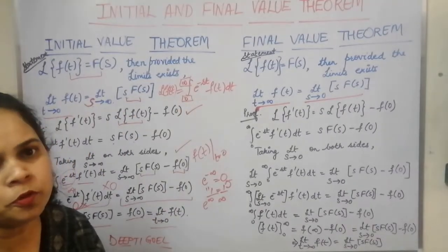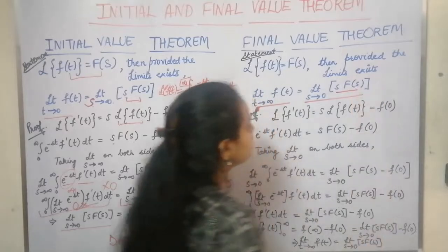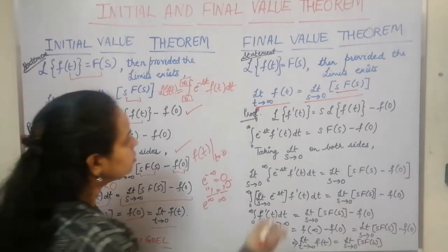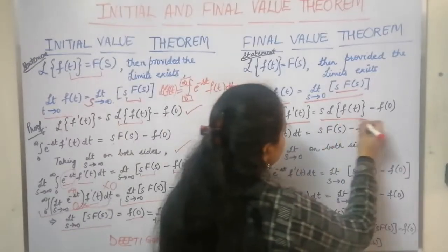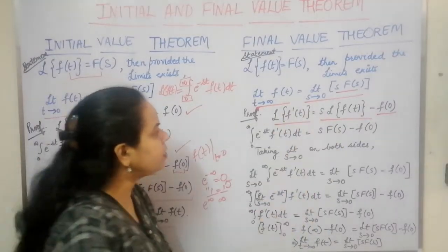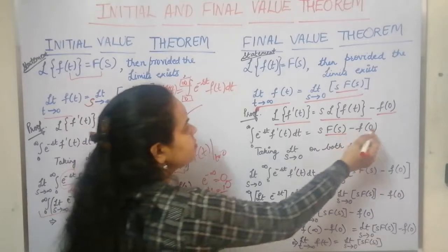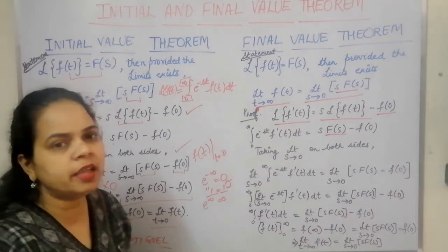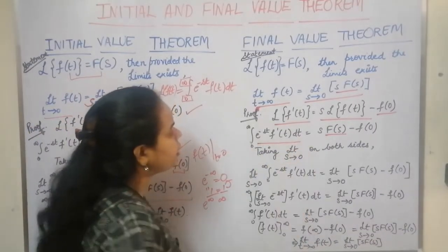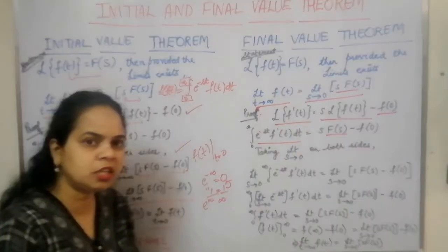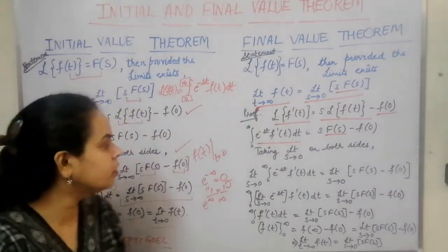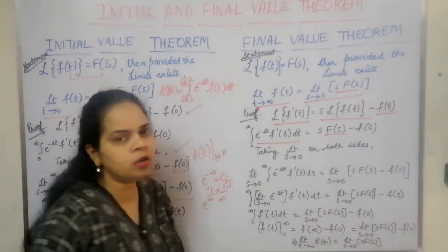Now let us begin the proof of the final value theorem. Again, s·F(s) is associated with the Laplace of the derivative of the function. So: Laplace of f'(t) = s·F(s) − f(0). We can apply the definition of the Laplace of f'(t) and write it as the integral from 0 to infinity of e^(−st)·f'(t) dt. Since s·F(s) is associated with the limit s→0, we take the limit s→0 on both sides.